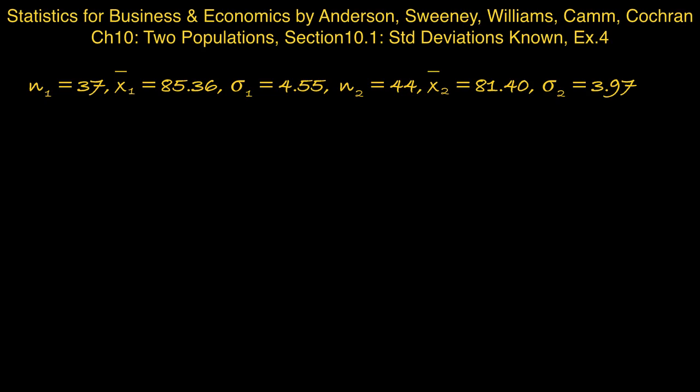Part A: What is the point estimate of the difference between the population mean rating for ships that carry fewer than 500 passengers and the population mean rating for ships that carry 500 or more passengers? The estimated difference in means will simply be the difference in sample means, which comes to 3.96.